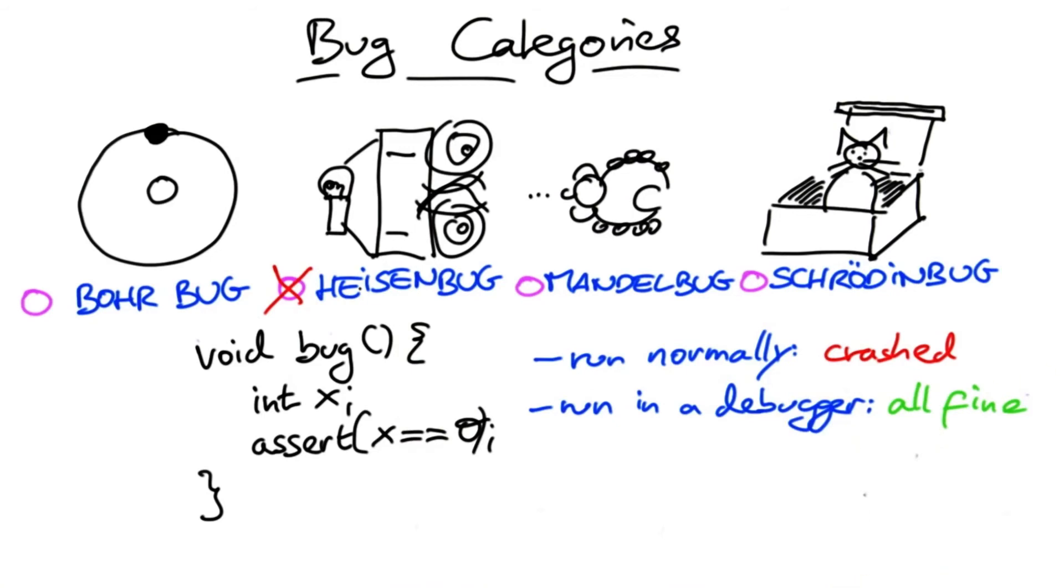If you suspect a Heisenberg, think what the debugger does differently than the normal execution and observe the program execution by at least two independent means. Say, a debugger and logging output or two different debuggers or whatever you have in order to find out what's going on.